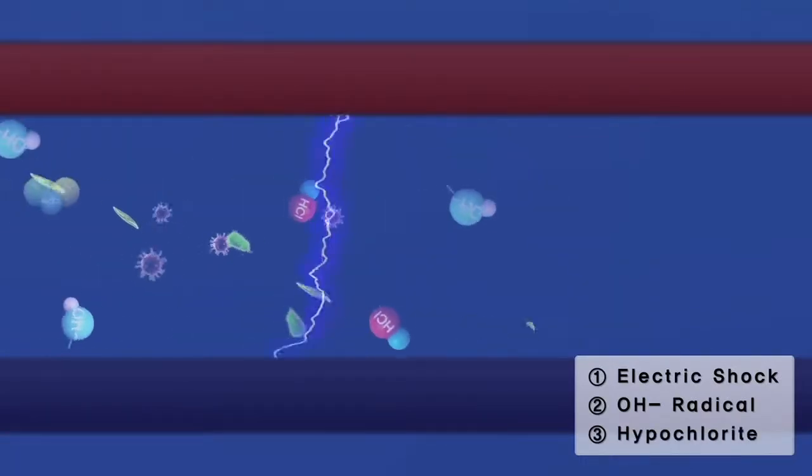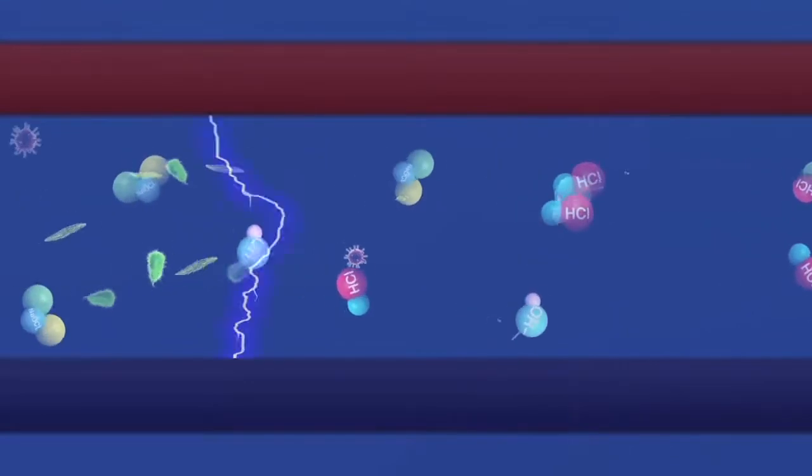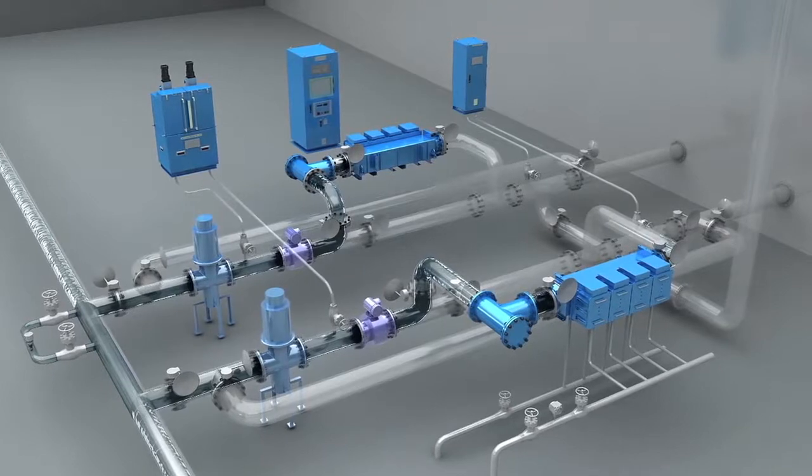The electric energy and the production of oxidants such as hydroxyl radical and hypobromite can oxidize cell membranes and cell walls to disinfect organisms.